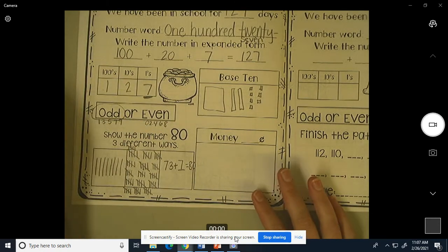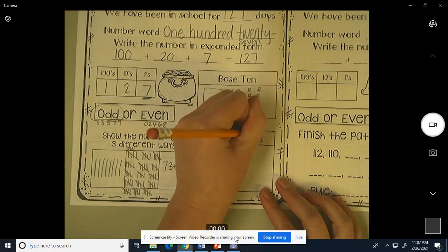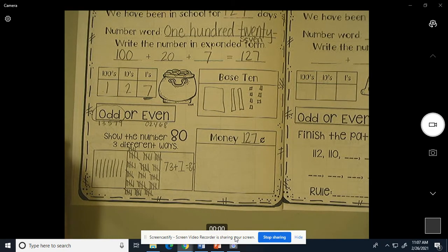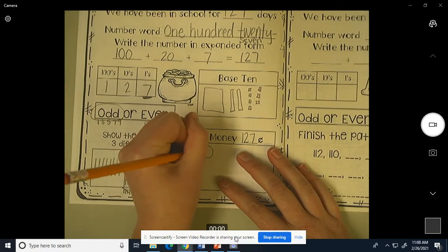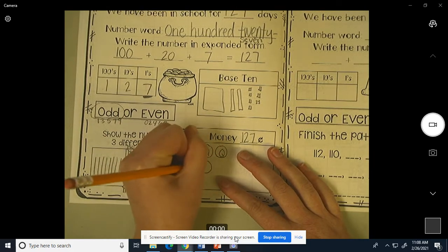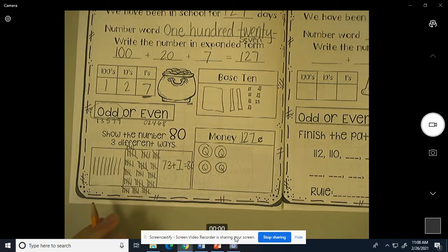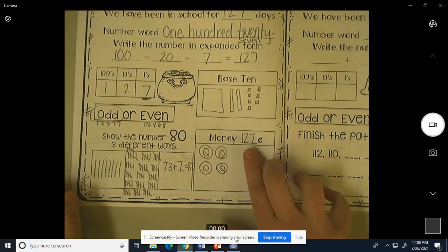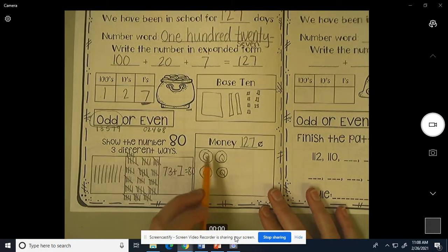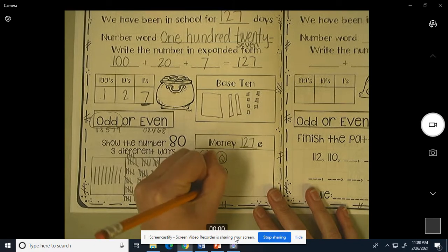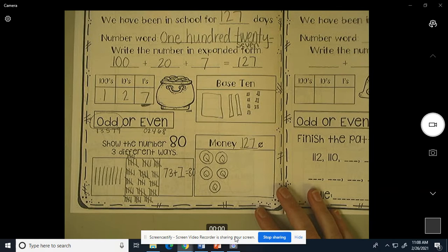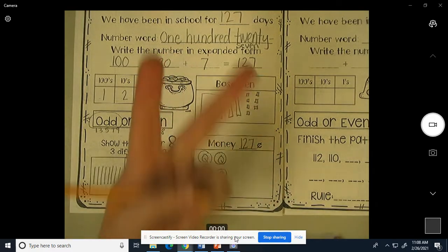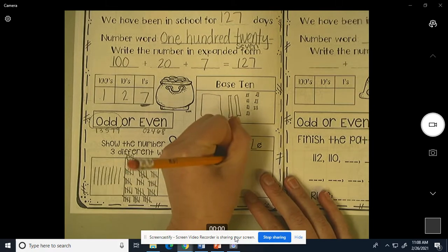Our money today is going to be 127 cents. That means we're going to have $1.27. So if we want $1, how many quarters would we need? How many quarters would we need to make $1? 25, 50, 75, $1. Four quarters equal $1. Now we need to make 27. So if we did another quarter, how much would we have? 25, 50, 75, 100, 125. And if we have 125 and we need to get to 127, 125, 126, 127. We need two cents, so we need pennies. One, two.